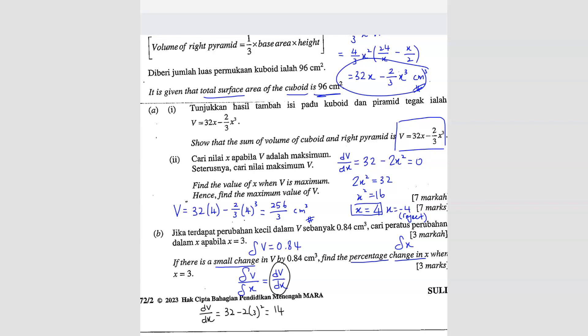So this one here is 14. And then you have the ΔV which is 0.84. So you can find Δx. So Δx will be 0.84 divided by 14. So Δx is 0.06. So now you've already found Δx. Now you want to find percentage. So percentage means what? You take the Δx over the original amount of x times 100%. So what is the Δx? Δx is 0.06 divided by the original value of x is 3 times 100%. So you get your answer 2%. So the change is 2%.